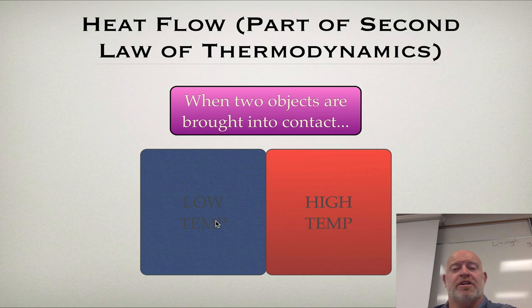There was a part in our history where there were people who were arguing that there was something called cold. There was heat and there was cold. And cold could move into heat and heat could move into cold. So they treated them as two different entities.